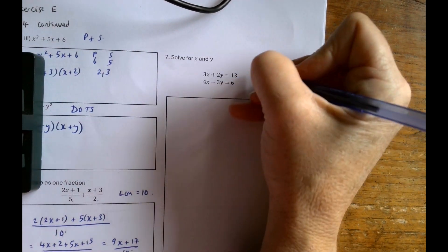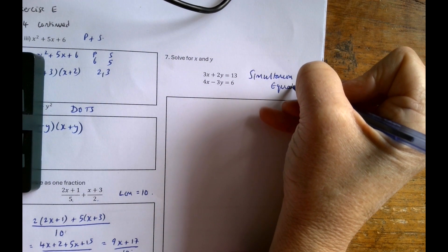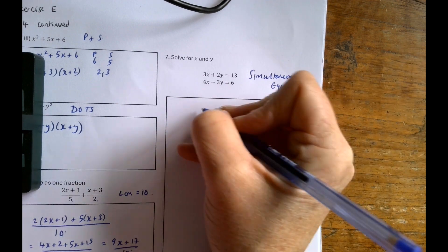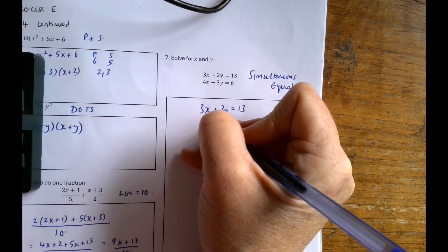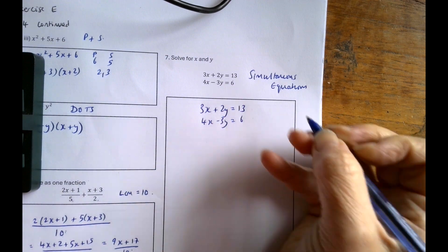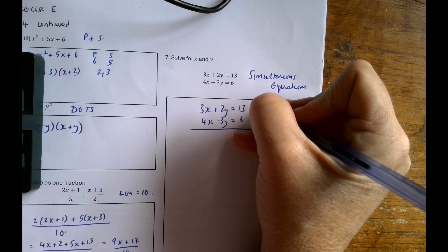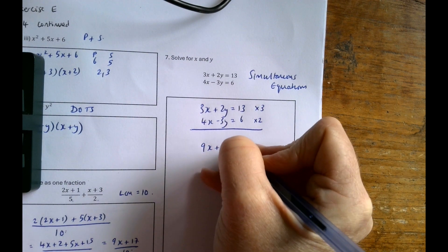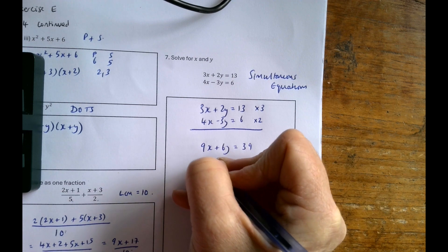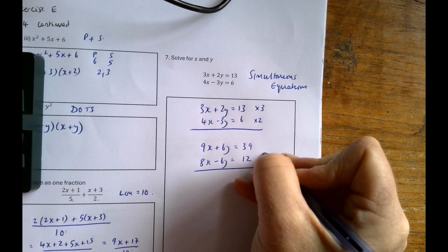So I'm going to solve for x and y. So these are simultaneous equations. I've got 3x plus 2y is equal to 13, 4x minus 3y is equal to 6. I'm going to try and get rid of the y's because they're already opposite signs. I'm going to make this into 6y and this into minus 6y. So 9x plus 6y is equal to 39, and 8x minus 6y is equal to 12. Then I can add them together.